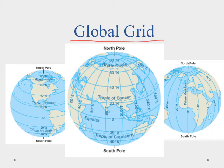The first thing we're going to talk about is the global grid. The global grid allows us to find any place on earth and provide a unique location for it. Because the surface of the earth is two-dimensional, we need two different things, and those are latitude and longitude. Latitude are lines that run parallel with the equator, and they measure how far north or south from the equator we want to go — they give us the direction of north and south.